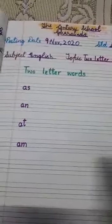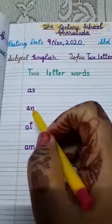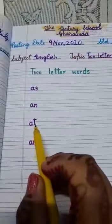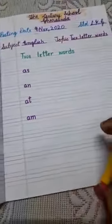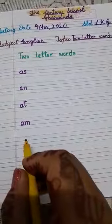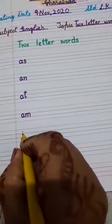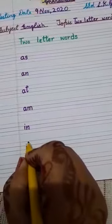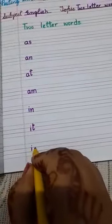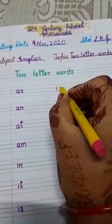We learn AS, AN, AT, AM. Now let's start with vowel I: IN, IT, IS, IF.